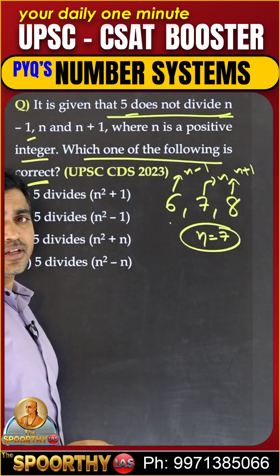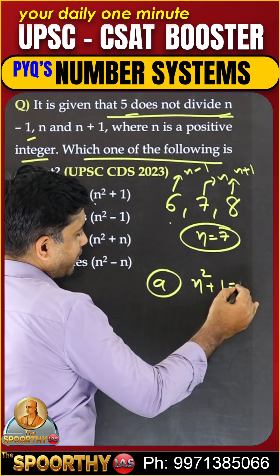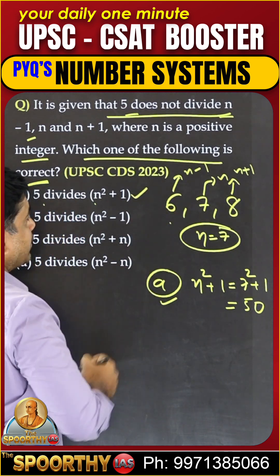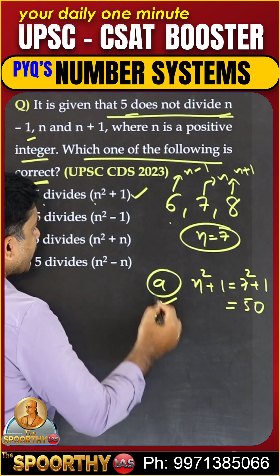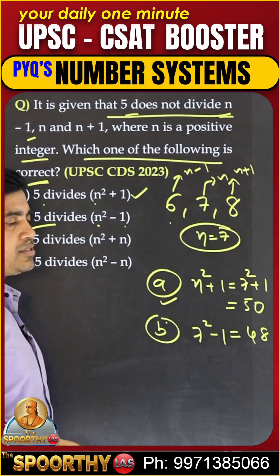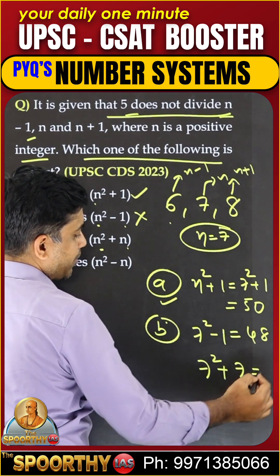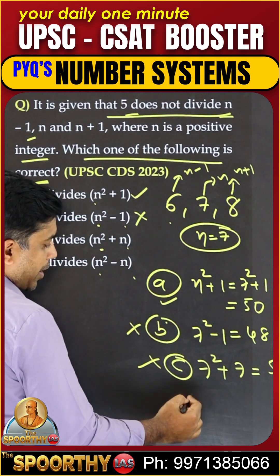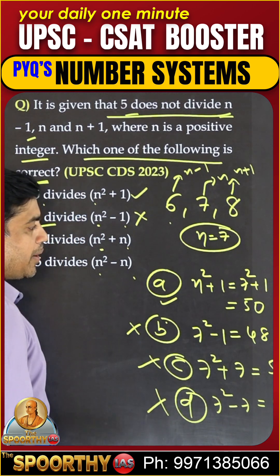What is the first option? 5 divides n squared plus 1. n squared plus 1 is 7 squared plus 1, which is 50. It is divided by 5, so the first statement is correct. What about the second one? n squared minus 1 means 7 squared minus 1, which is 48 — not divided by 5, so it is false. n squared plus n: 49 plus 7 is 56, which is also not divided by 5. Last one, n squared minus n: 7 squared minus 7 is 42, again not divided by 5.